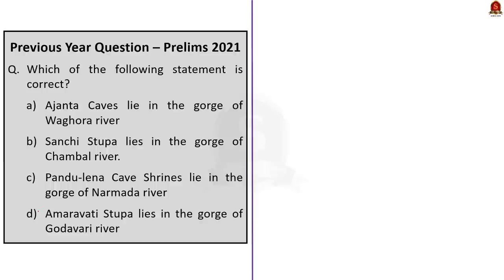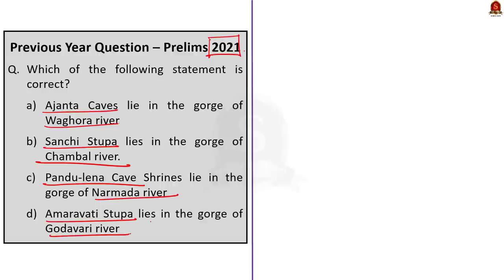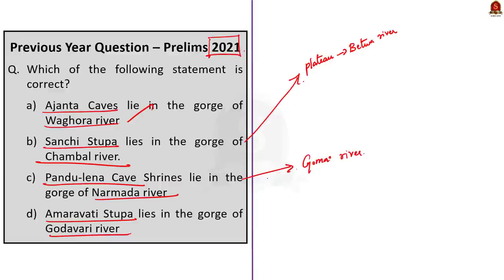Second question (previous year prelims 2021): Which of the following statements is correct? Option A — Ajanta Caves lie in the gorge of Vagora River. The correct answer is option A. Sanchi Stupa lies in an upland plateau region just west of Betwa River in Madhya Pradesh — not Chambal River. Pandulena Caves, also known as Nashik Caves in Maharashtra, are located near Gomei River — not Narmada River. Amaravati Stupa is located in the gorge of Krishna River — not Godavari River. So the correct answer is option A.